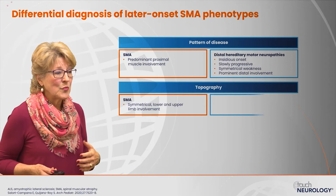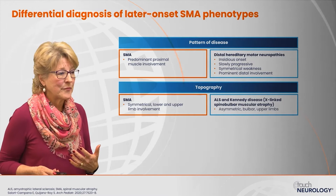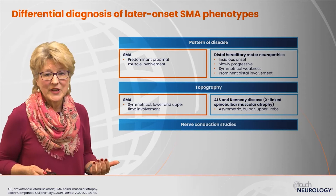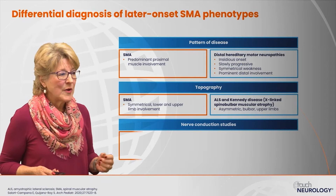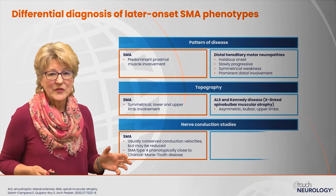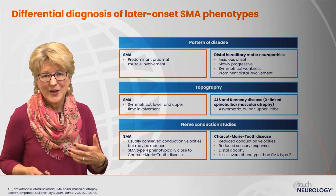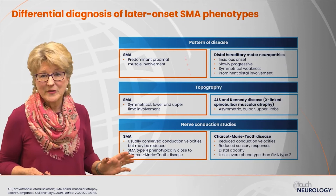ALS and Kennedy disease are more characteristic for asymmetric presentation of weakness with bulbar findings and upper extremity weakness. Although nerve conduction studies were used routinely prior to genetic testing being more available, we don't do them as often now. For spinal muscular atrophy, we usually expect conserved conduction velocities, possibly slightly reduced. With hereditary sensory motor neuropathy or Charcot-Marie-Tooth disease, we definitely expect reduced conduction velocities and declined sensory responses — sensory nerves are not affected in spinal muscular atrophy.